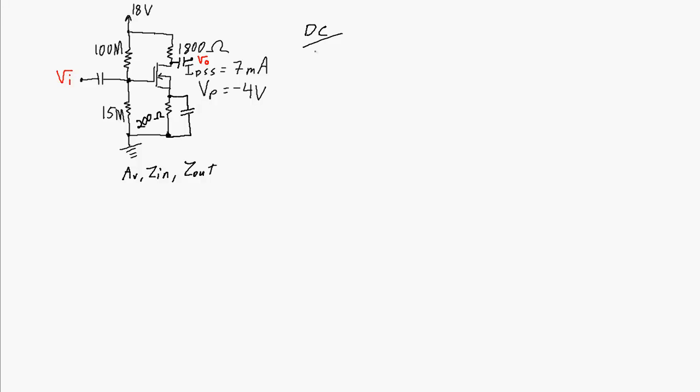The first thing I need to do is find the DC operating point. To find it, I need a couple of pieces of information: I want to find ID and VGS. These are two unknowns, so I'm going to need two equations for this circuit. The first equation is Shockley's equation.